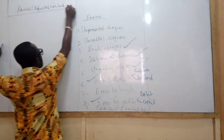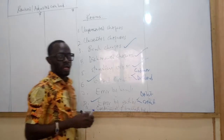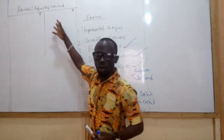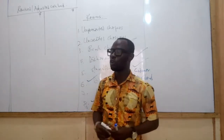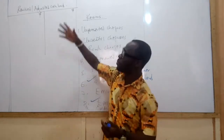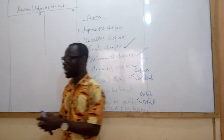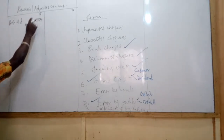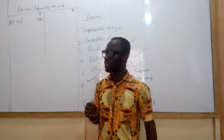In the revised or adjusted cash book, we bring in the closing balance from the previous period as the opening balance. For my scenario, that was $2,000. Whether it is a debit or credit balance, we bring it in accordingly.